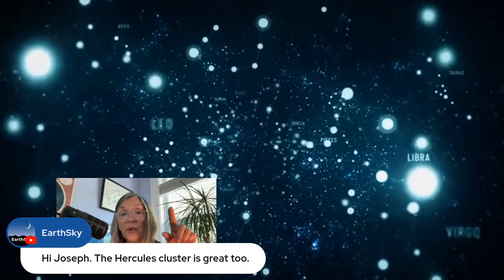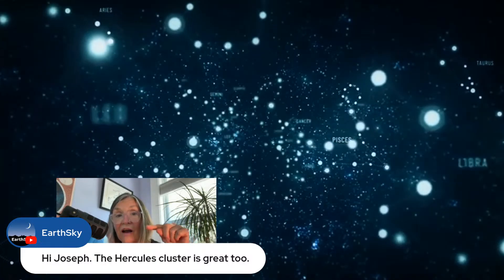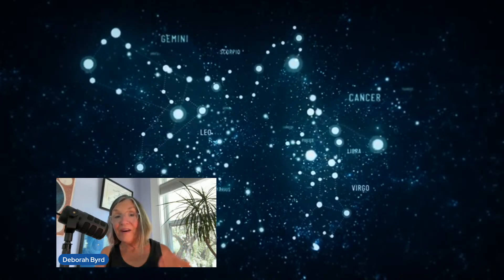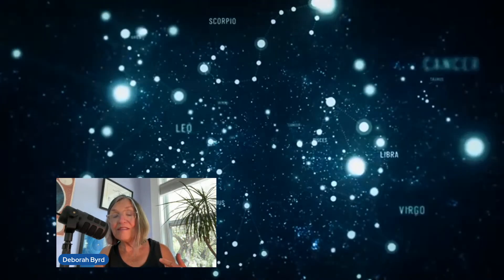And you might not know that the sun spends less time in front of Scorpius than any other constellation of the zodiac. It shines in front of Scorpius for only a week every year from November 22nd to 29th. And remember, we're talking about the constellation here, not the astrological sign of Scorpio.